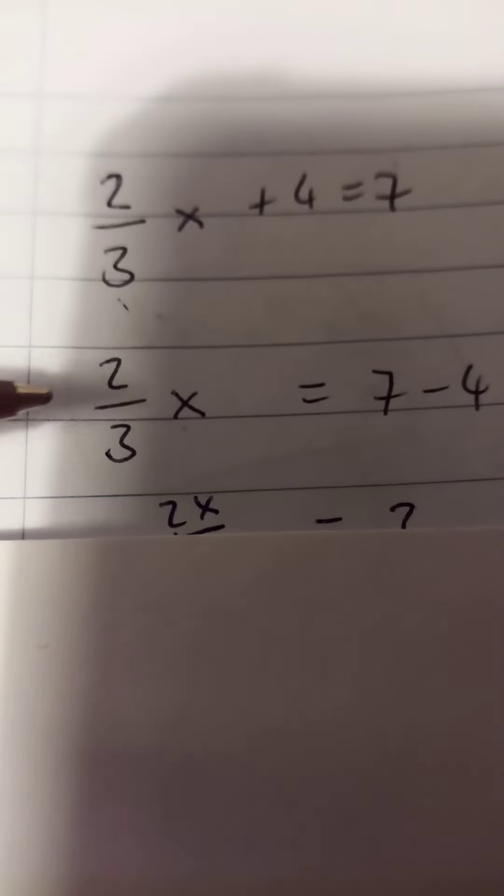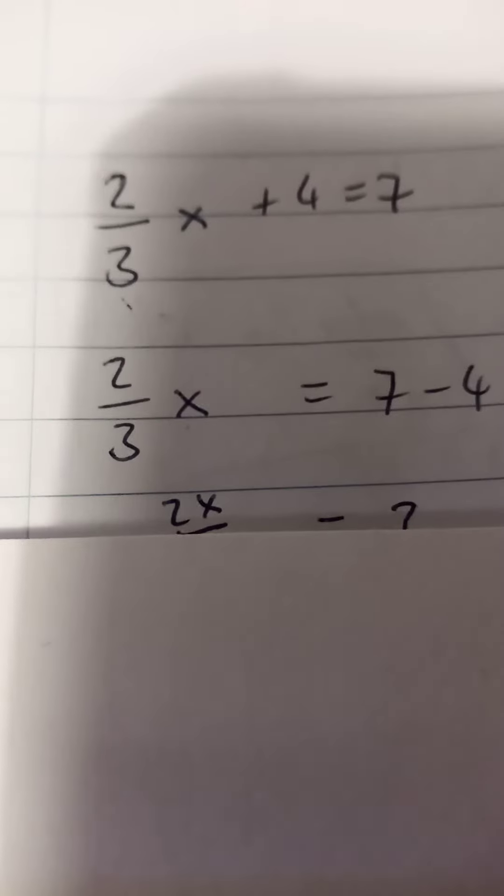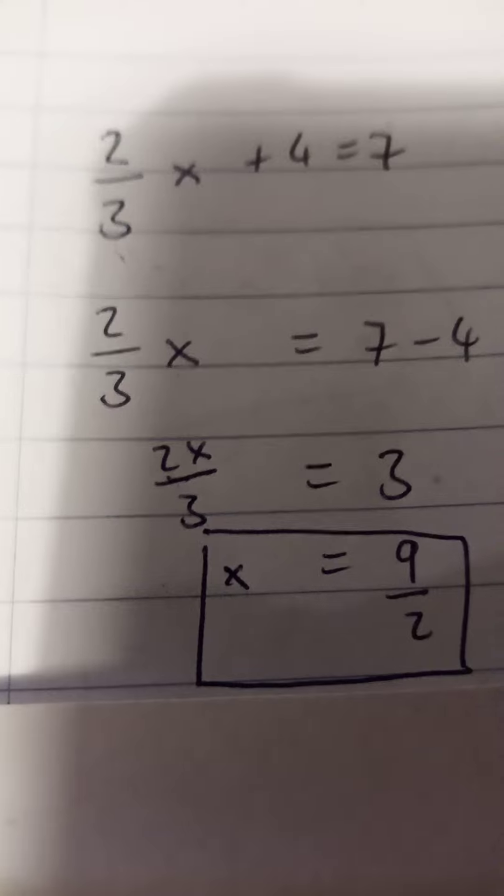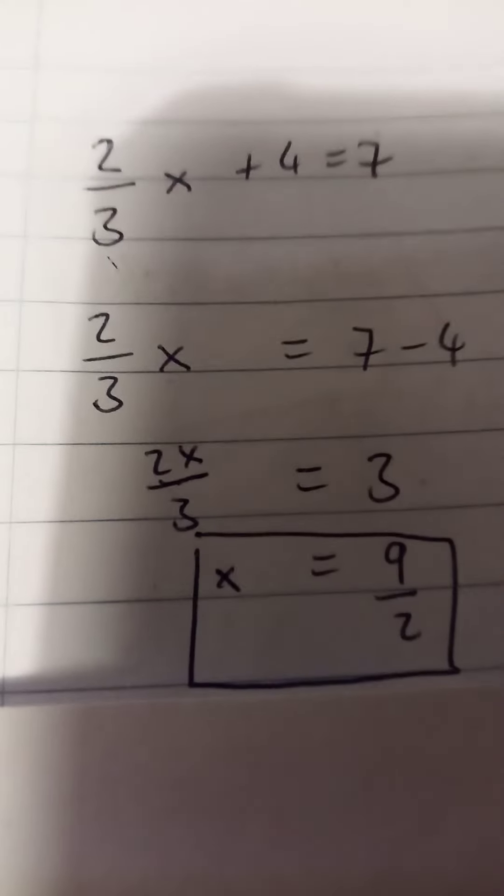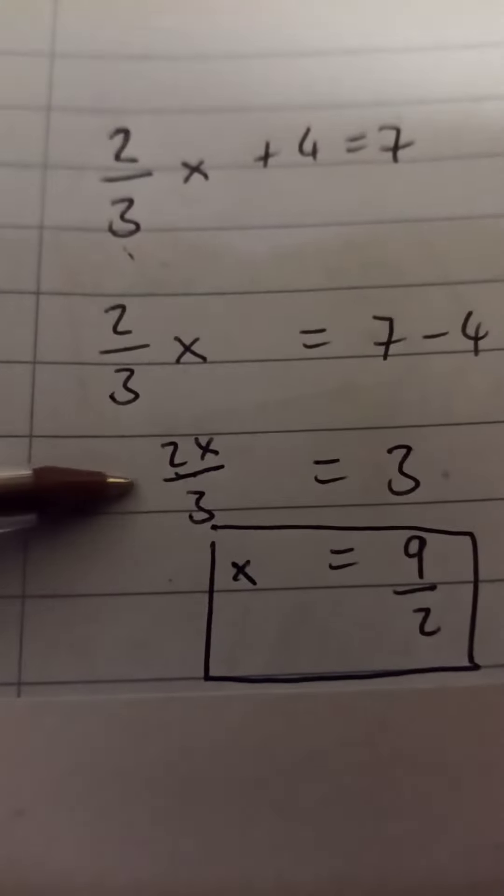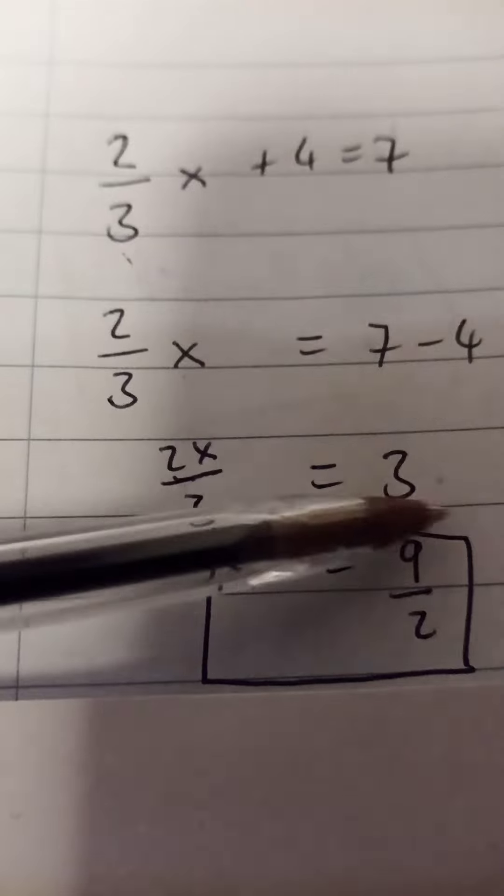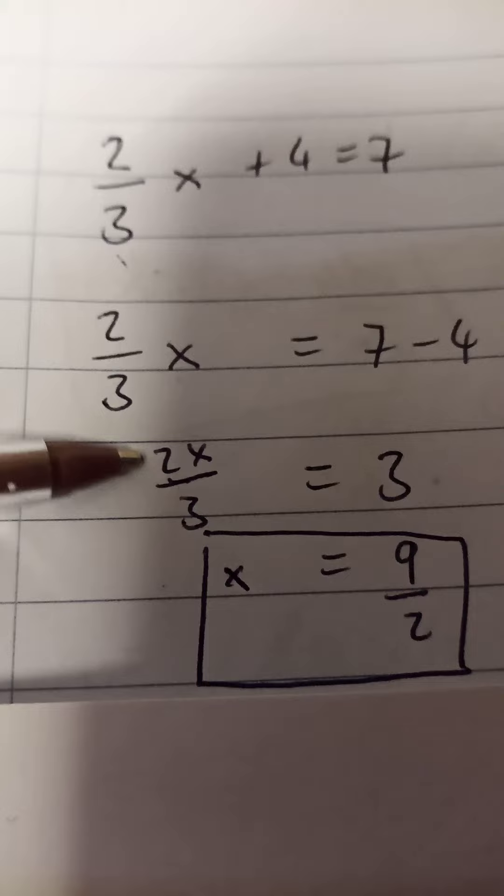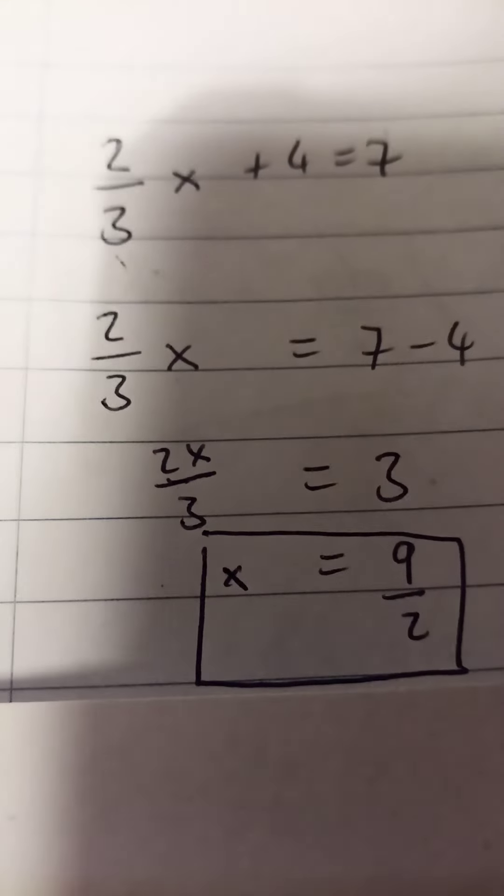Now when you see 2/3 of x, the x is attached to the 2 on top, so it's 2x over 3 is equal to 3 when you simplify 7 minus 4. Then you just have to cross multiply here, so that's 3 over 1. 3 by 3 is 9, and then you'll divide the 2 underneath to give 9 over 2.